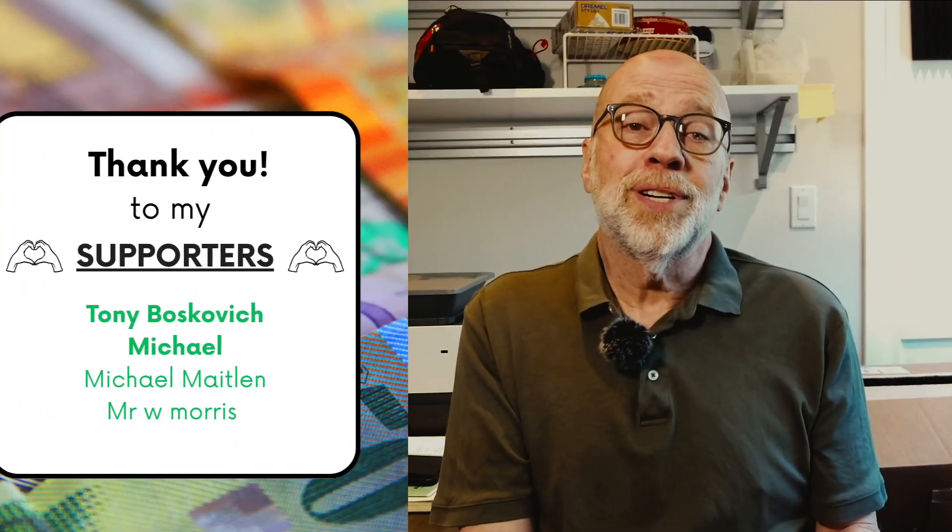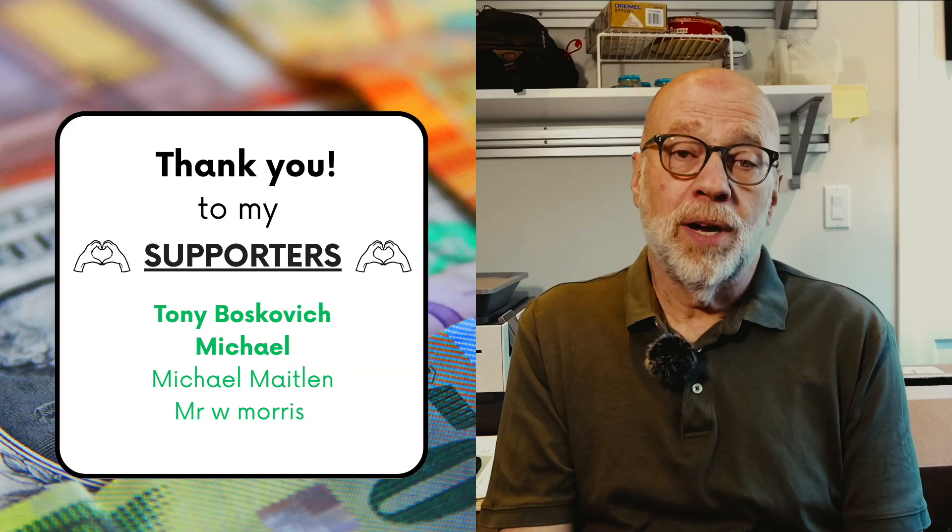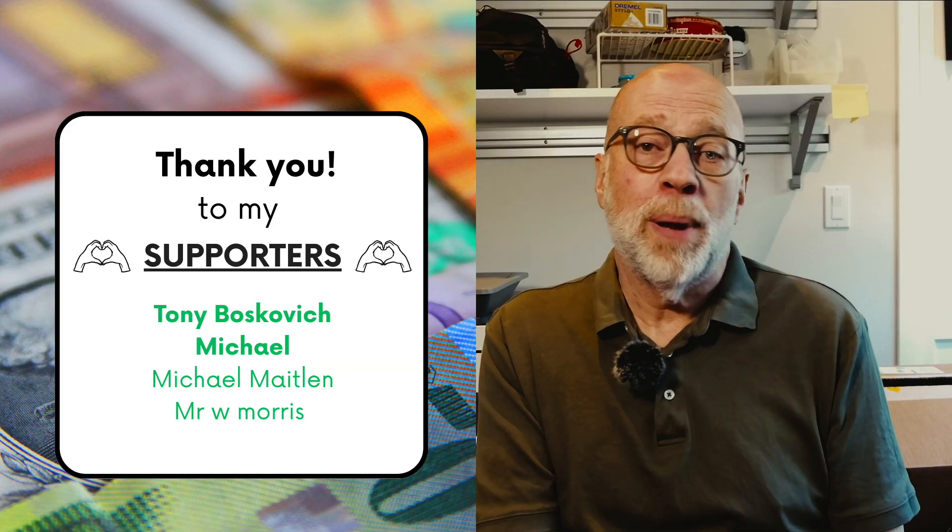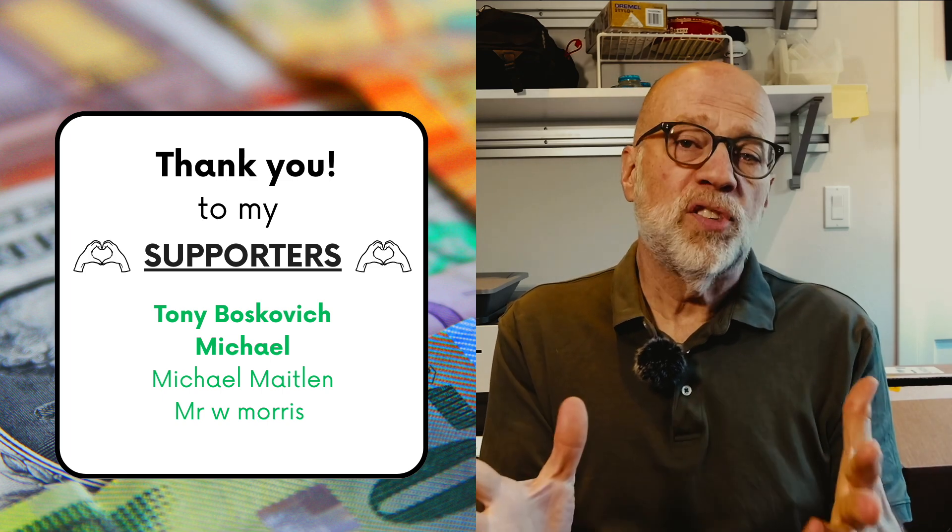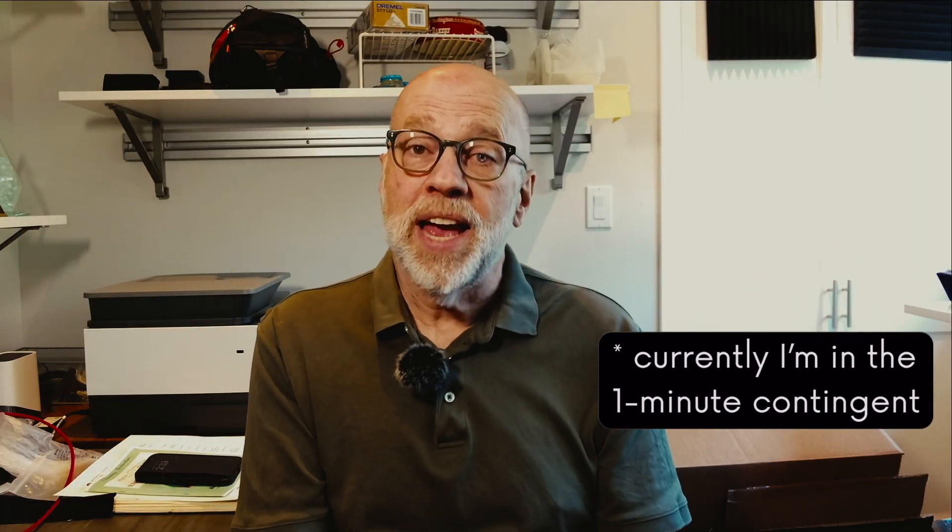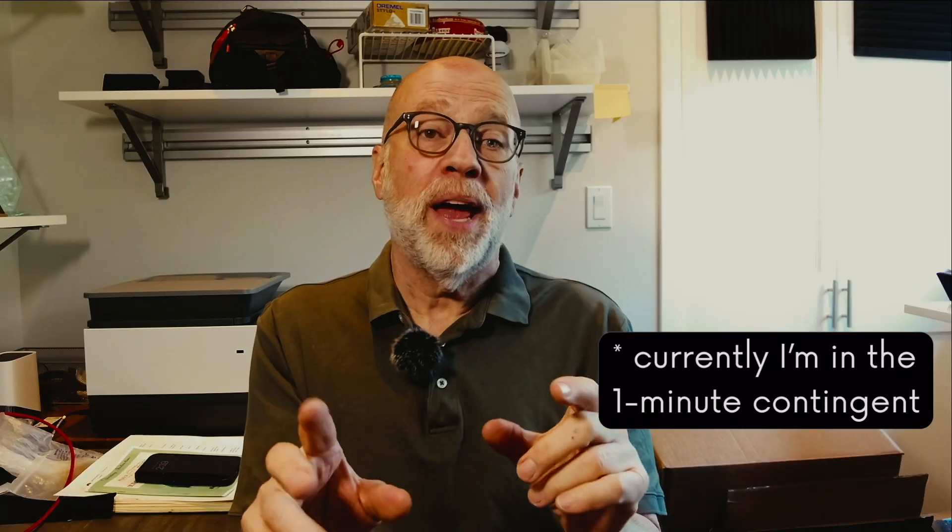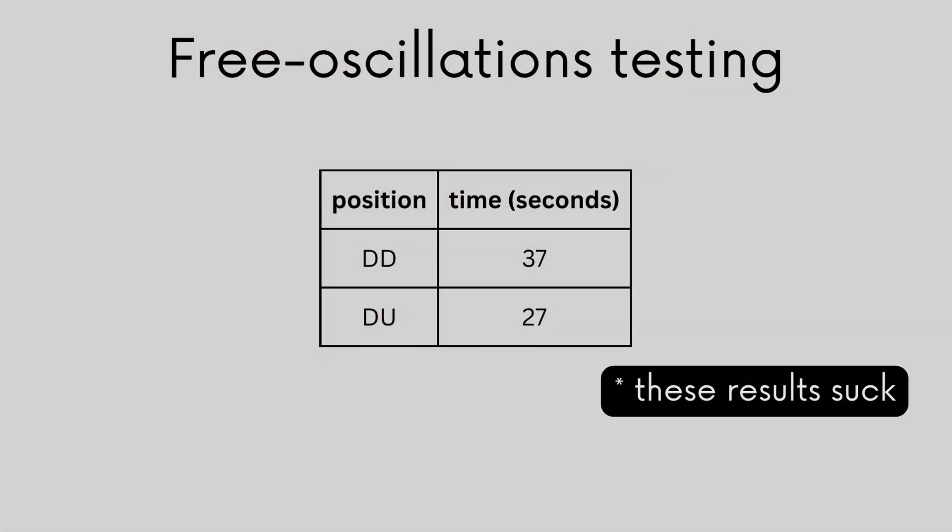It's funny, I've gotten different guidance from watchmakers who I respect about what results a good assembly should get on this test. Some say that the wheels should oscillate at least one minute until stopping. Some say 30 seconds until stopping. And some say the test is worthless because all springs and balanced staffs and wheels are different. But in any case, regardless, you would expect the same values on running the test in a dial-up versus dial-down position.